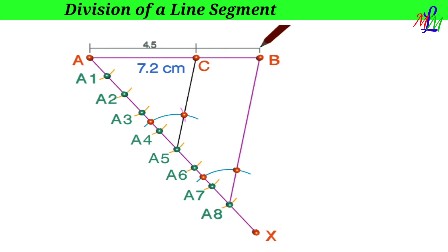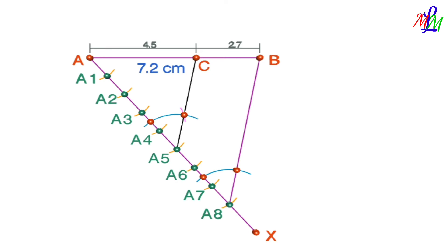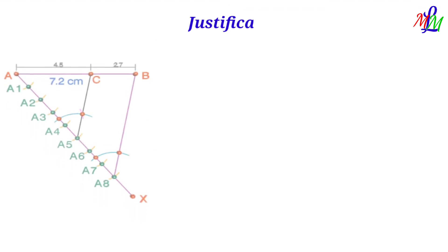The length of AC is 4.5 centimeters and the length of CB is 2.7 centimeters. Now we have to justify this result — we can justify it with the help of Thales theorem.